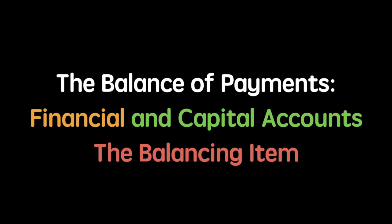The balancing item is the difference between the current account and the capital and financial accounts. It is used as a statistical balance to account for the differences between the accounts. The balance of payments should sum to zero and this item exists to address errors and omissions.